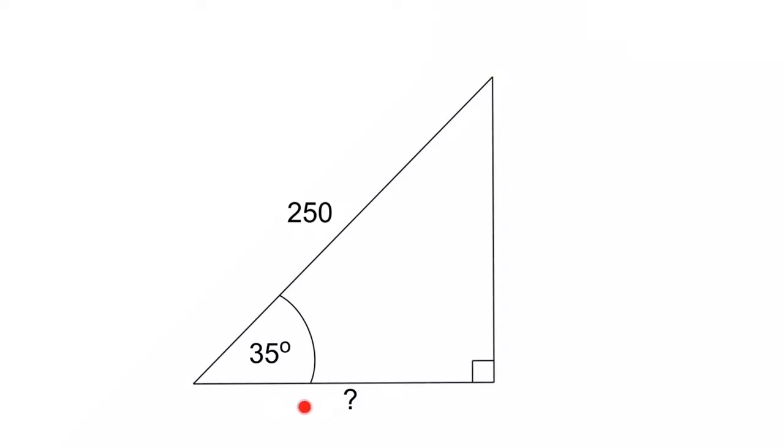And we're going to try to determine what this adjacent side is. So if we have adjacent, we have hypotenuse, and we have an angle, we should be able to remember from our last video that we're going to use cosine, because we have adjacent over hypotenuse, but we don't know what this is.